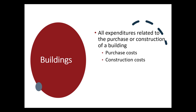Now we have buildings. All expenditures related to the purchase or construction of a building should be capitalized upon acquisition. This includes purchase price, closing costs such as legal fees, and costs required to make the building ready for intended use — for example, if you buy a foreclosed building filled with trash. If you construct a building, costs may include the contract price, architect's fees, building permits, excavation costs, and interest costs during construction. Interest costs incurred while constructing a building should be capitalized to the cost of that building.